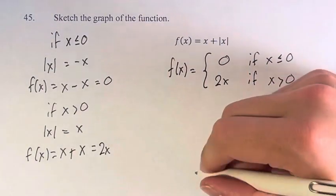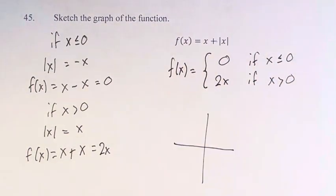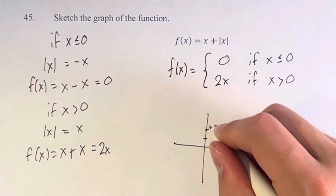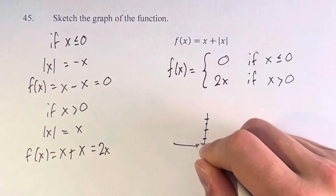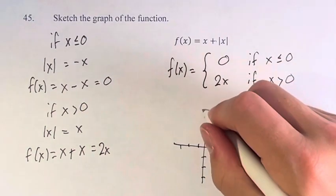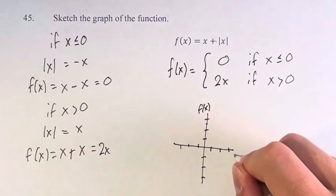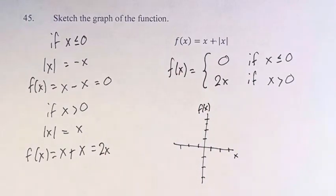And now we have a function that we can easily graph. Right here, let's just draw some of the points on the axes. It doesn't have to be too fancy. On the y-axis, we have f(x). On the x-axis, we just have x.